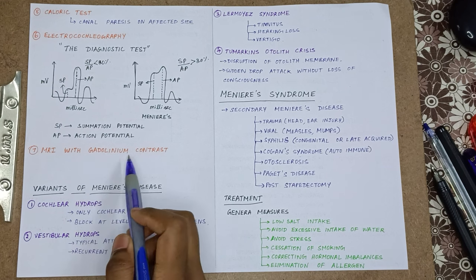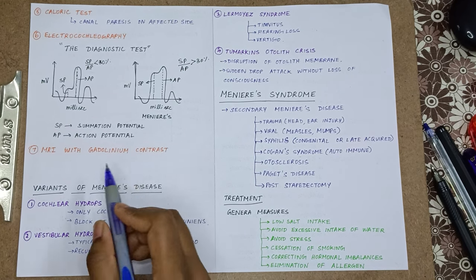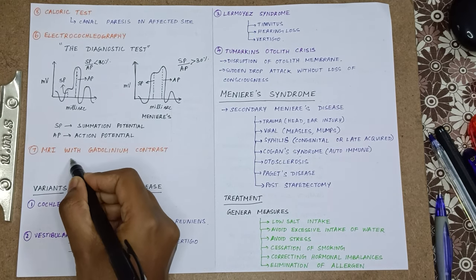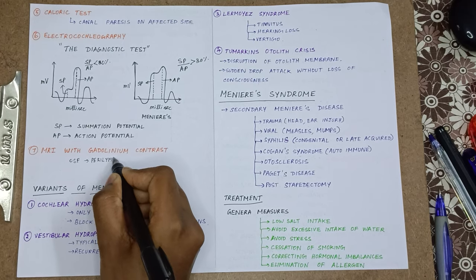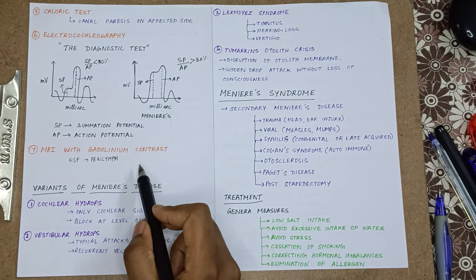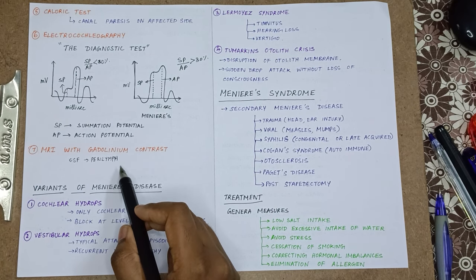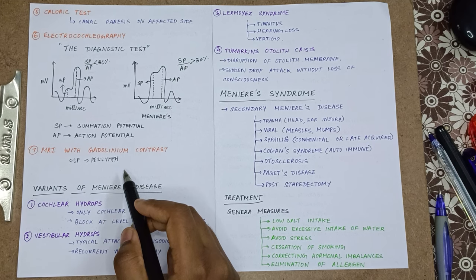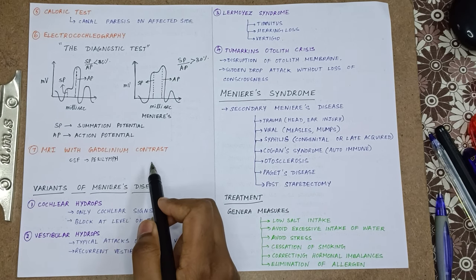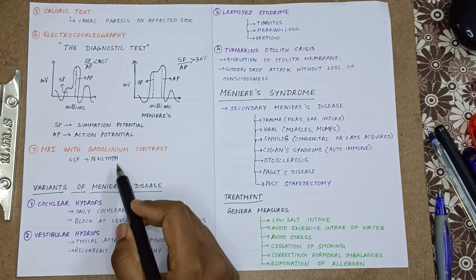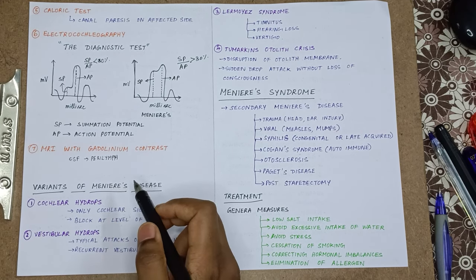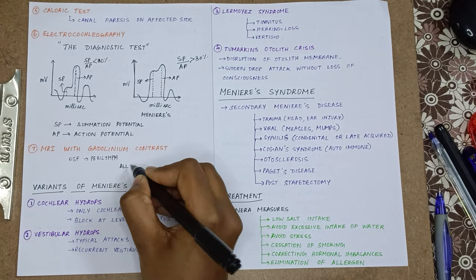The last investigation is MRI with gadolinium contrast. The gadolinium contrast is injected into the CSF, which is the perilymph, and it dyes the perilymph. In a normal person only the perilymph is colored. But in Meniere's disease, due to rupture of the Reissner's membrane and mixing of perilymph and endolymph, the gadolinium dye also enters the endolymph, so all three compartments are colored.